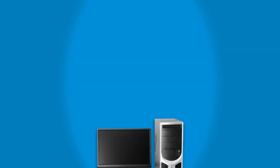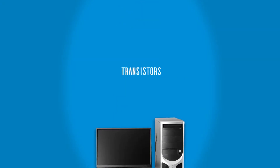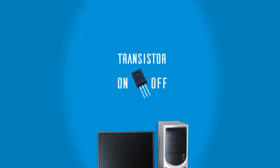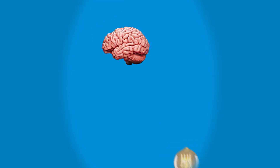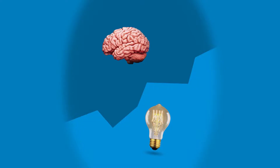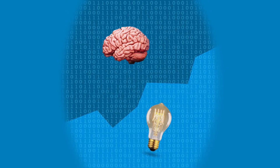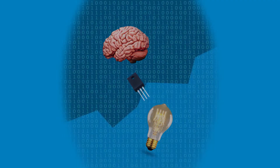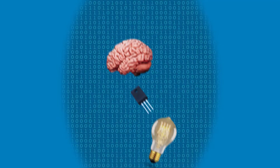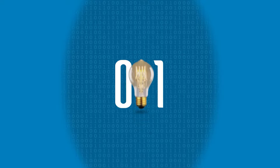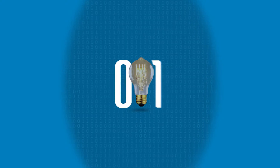Computers are electronic devices made with tens of thousands of transistors. Each transistor can be turned on or off — think about it like a switch. We use binary code to instruct when the transistor is turned on or turned off. Binary code means using numbers zero and one, where zero switches off and one switches on.